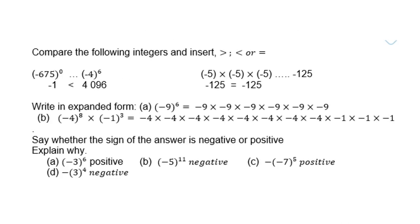Compare the following integers and insert a greater than, less than, or equal sign. Negative 675 to the power of 0 is negative 1. And negative 4 to the power of 6 gives you 4096. Therefore, negative 1 is less than 4096.